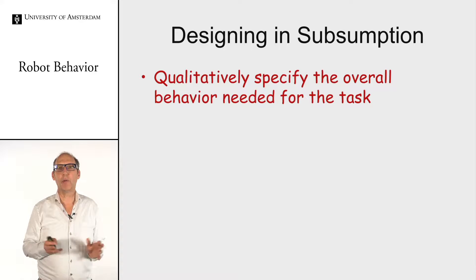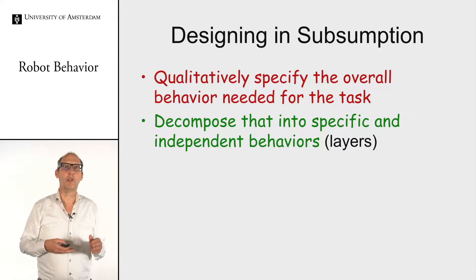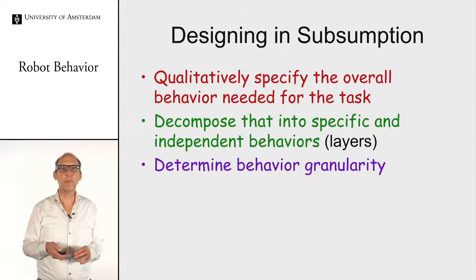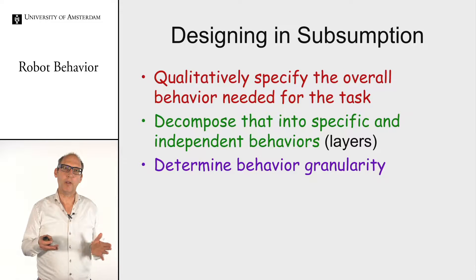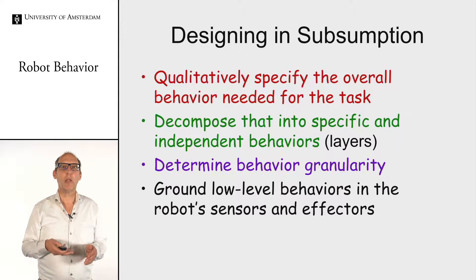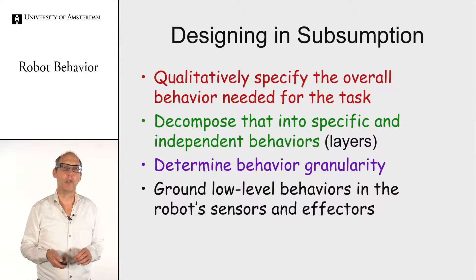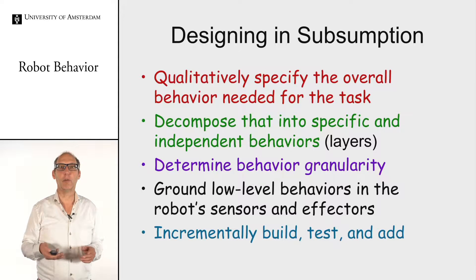Designing in subsumption is similar to normal programming but also a bit different. First, write down the sort of behavior you need. Then think about what triggers that task and how you can decompose it into different components. For each component, consider the granularity — how large you want the rules to be. Then ground those behaviors with the sensors and actuators you have on the robot, and start building it as fast as possible.